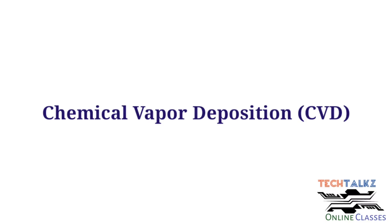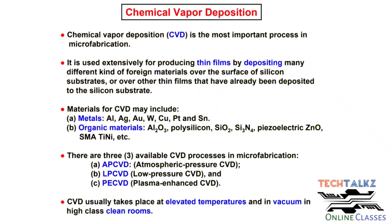Dear students, in the online class we have thermal oxidation covered. In this session, there is chemical vapor deposition, i.e. CVD process. Generally, thin films on a substrate use the CVD process. There will be certain chemical reactions before deposition. Metal layers, organic materials, compounds — for these we use the CVD process.